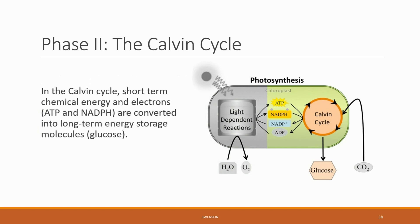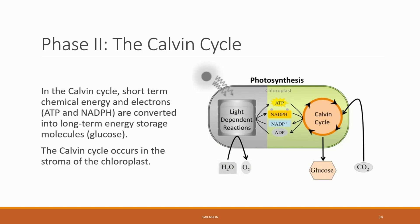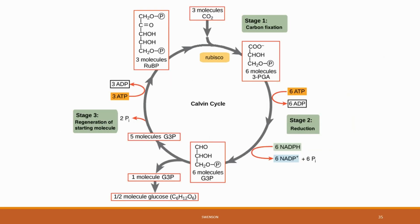That summarizes the first phase of photosynthesis. Let's move to phase two: the Calvin cycle. Short-term chemical energy and electrons as ATP and NADPH are converted into long-term energy storage molecules like glucose. The Calvin cycle occurs in the stroma of the chloroplast. We'll get into much greater detail about the Calvin cycle than we did with the citric acid cycle. We can slice the Calvin cycle into three main processes: at the top, CO2 enters the system, and at the bottom, glucose is created.